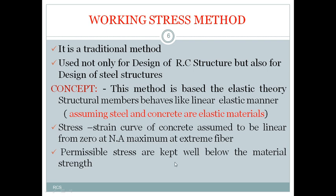Permissible stresses are kept well below the material strength. For example, if we take Fe415 grade steel, the characteristic strength is 415 Newton per mm square — that is the maximum capability. But in the working stress method, we use stresses much lower than this. Those stresses are called permissible stresses, allowable stresses, or working stresses.